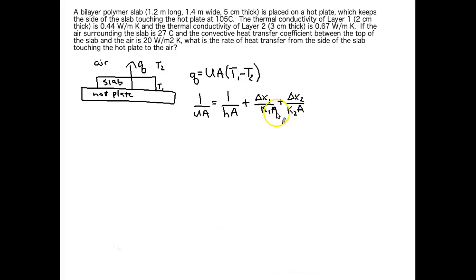Delta X1 over K1A takes care of the heat transfer through that first layer of the slab. Remember, it's a bilayer so there's two layers to this thing. We have two different thermal conductivities, so we need to treat them separately. So there's a first layer of the slab. Delta X2 over K2A is going through our second layer of the slab. Then we're at our hot plate. We can stop because that's where our first temperature is.